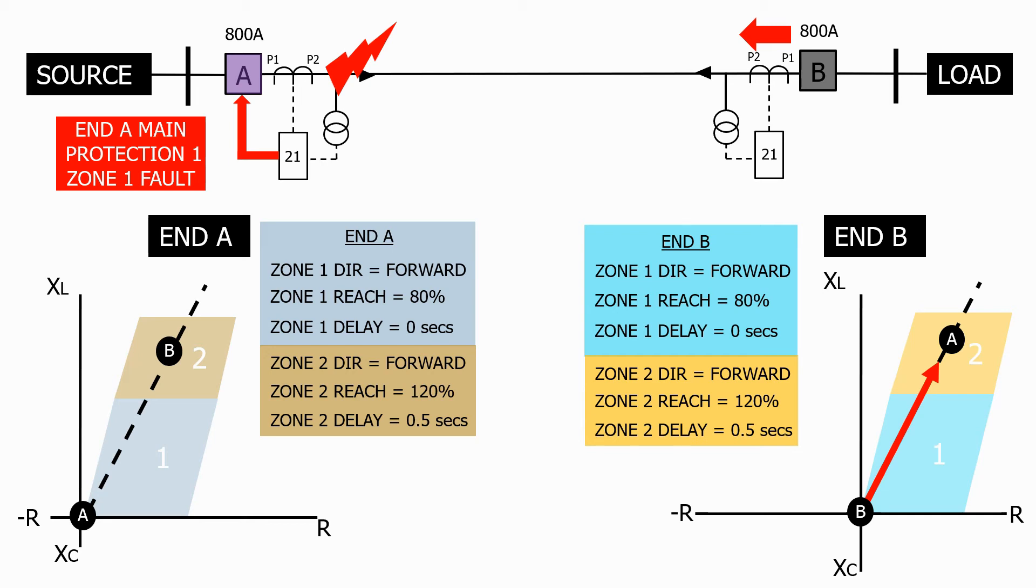The end B impedance relay is still seeing the fault, as fault current is flowing in from end B. It then trips after a 0.5 second time delay, clearing the fault from the system.